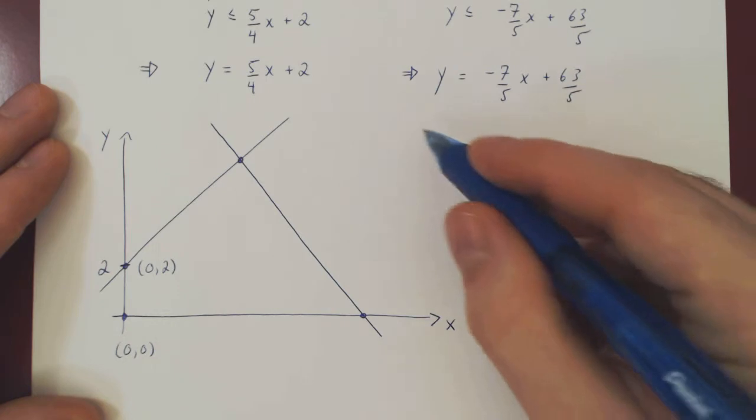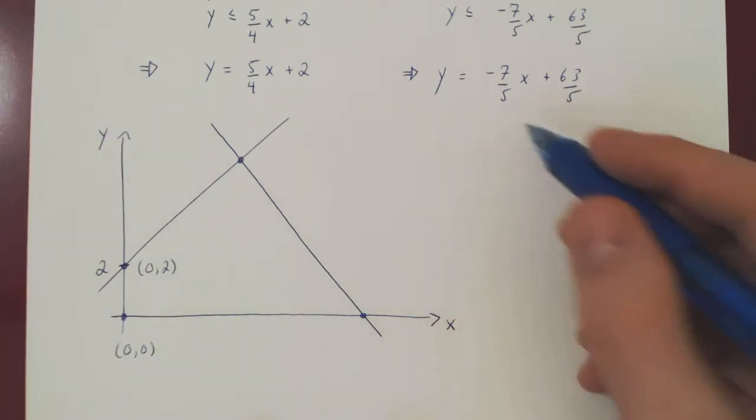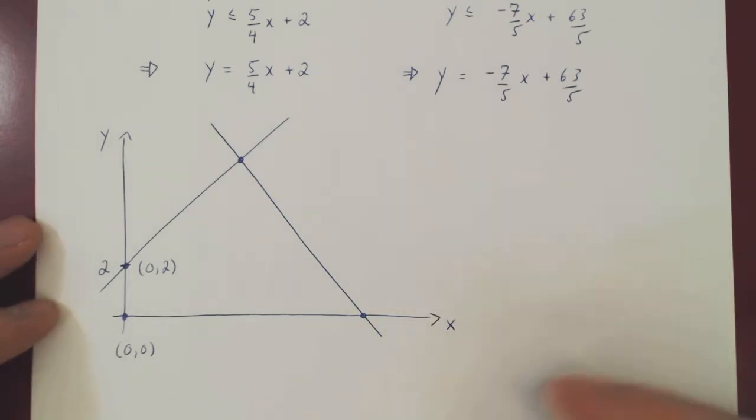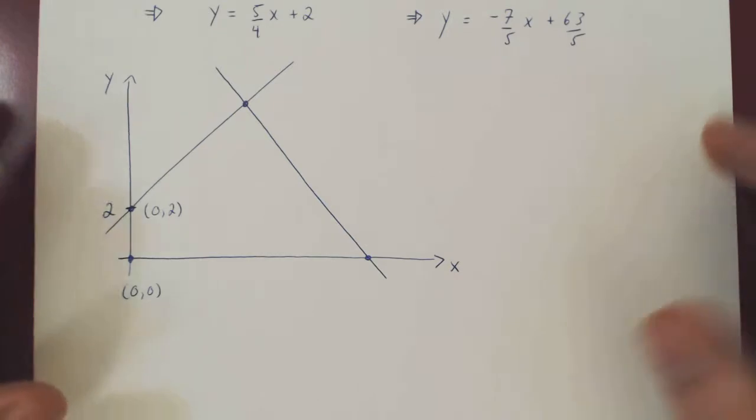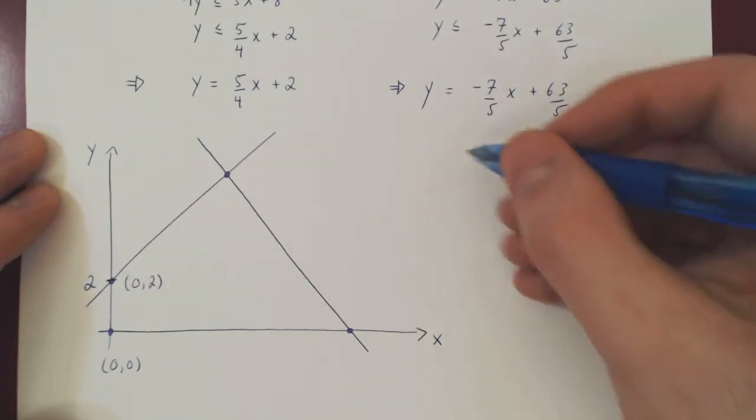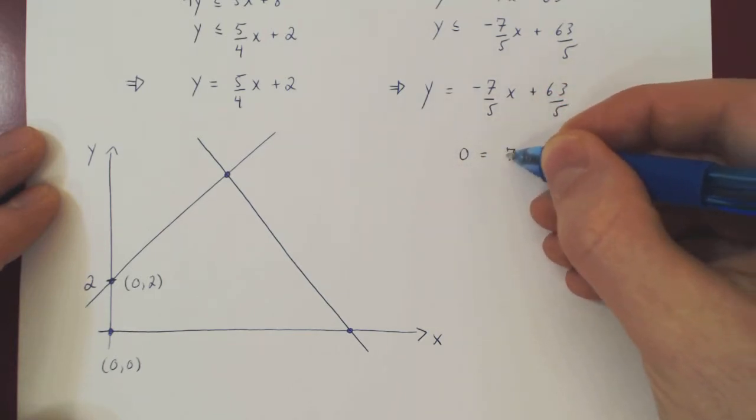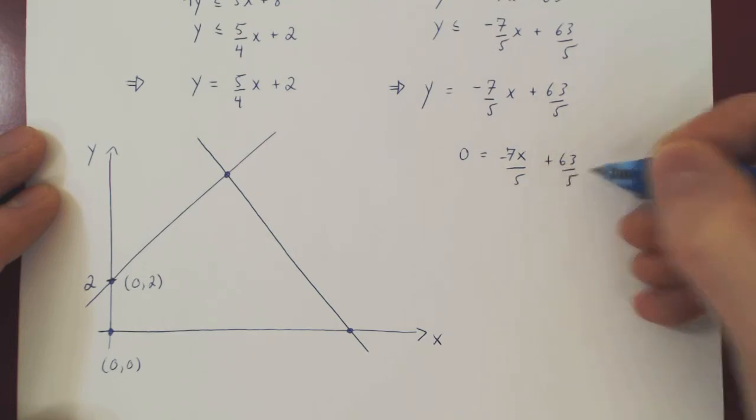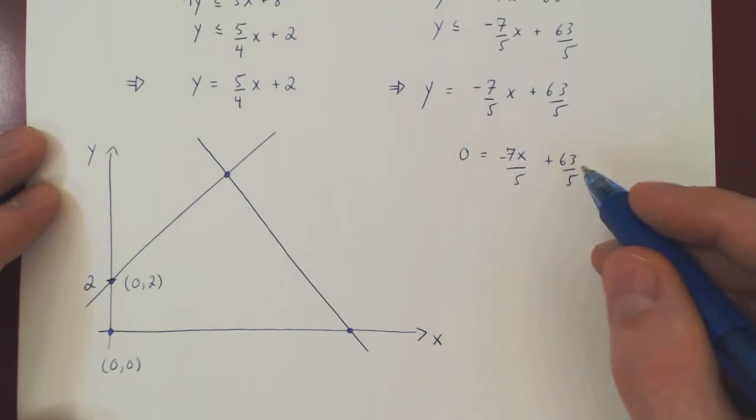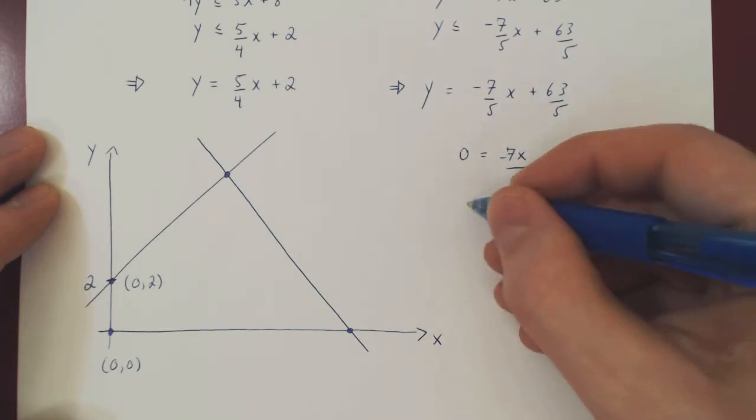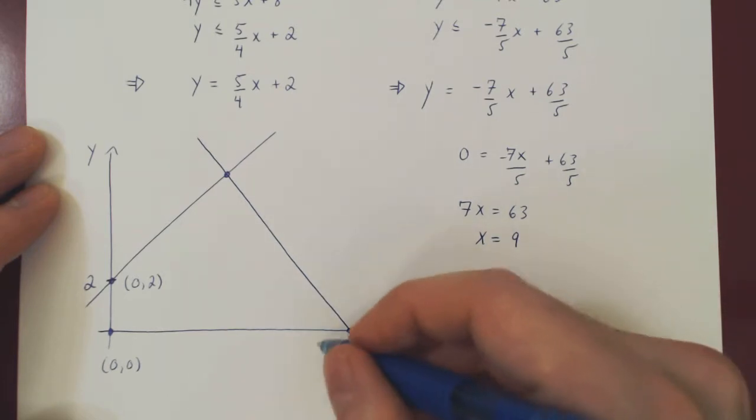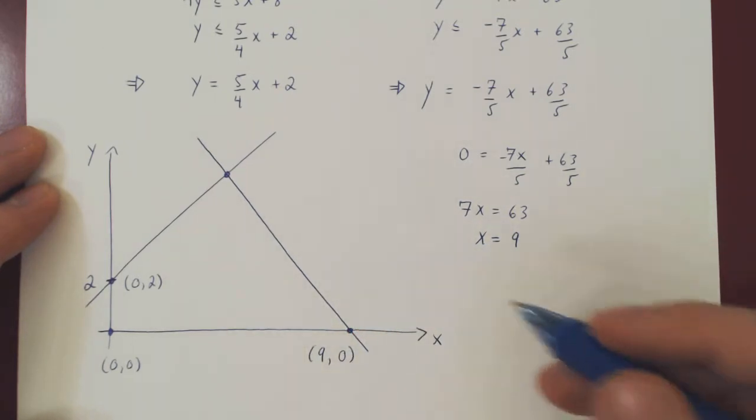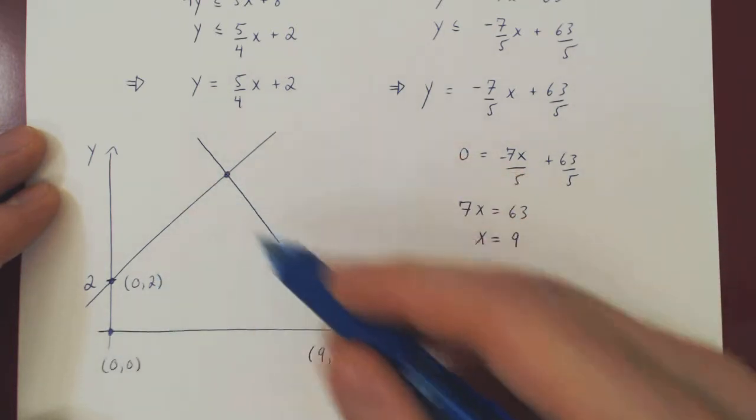Let's find this vertex which is the zero of this line, so let's solve for it. So we set y to be equal to 0. So we want the y-value to be 0. Therefore, 0 equals negative 7x over 5 plus 63 over 5. Multiply across by 5, you get 0 is negative 7x plus 63. Send negative 7x on the other side and so 7x equals 63, divide by 7, x is 9. So we have our third vertex, x equals 9, y equals 0.